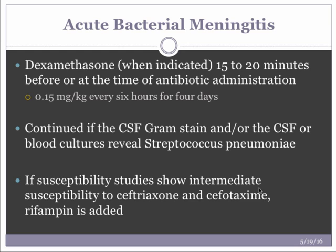Dexamethasone is given 15 to 20 minutes before or at the time of antibiotic administration. It is not given to adults who have already received antimicrobial therapy, as it is unlikely to improve outcomes at that point. We continue dexamethasone only if CSF gram stain or blood cultures reveal Strep pneumo. If susceptibility studies show intermediate susceptibility to ceftriaxone, rifampin is added.